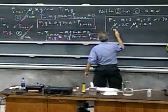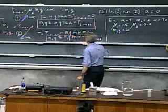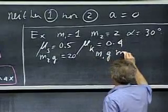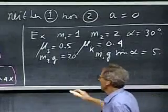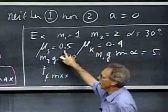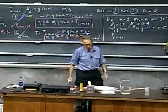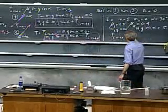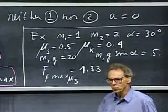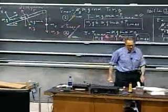Let's first take M2g. M2g equals 20 — we take g as 10, that is just easier. M1g sine alpha: the sine of alpha is one half, so that is 5. And what is Ff maximum? I use the friction coefficient 0.5, M1 equals 1, g equals 10, and the cosine of 30 degrees. I find that this is about 4.33 newtons, using the static friction coefficient. All my units are always in SI units, so force is always in newtons.